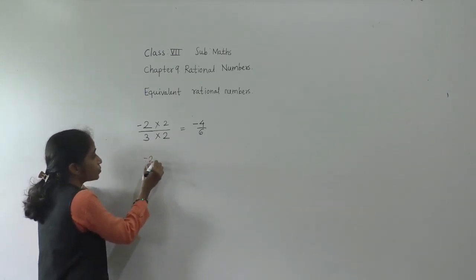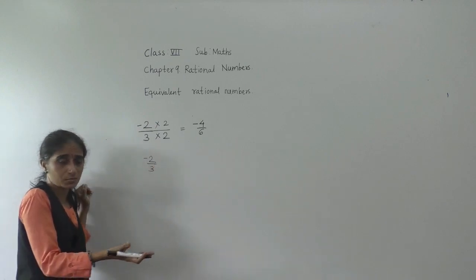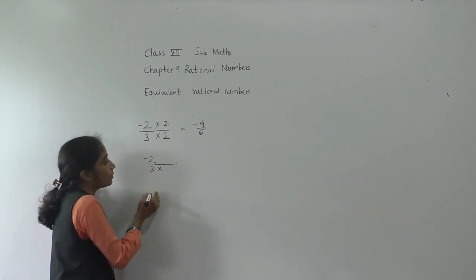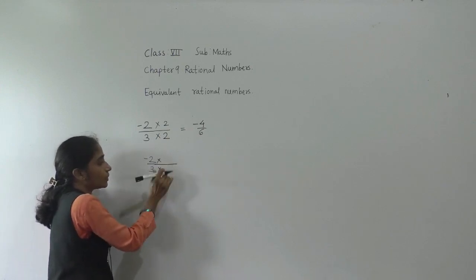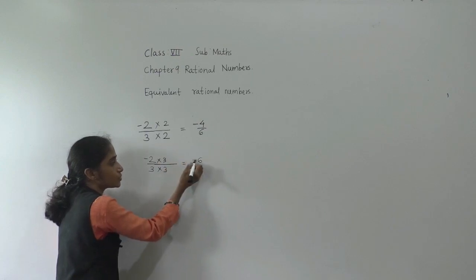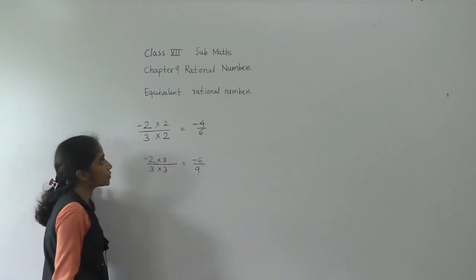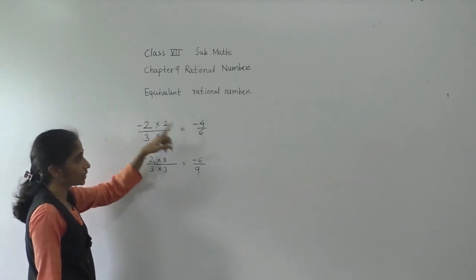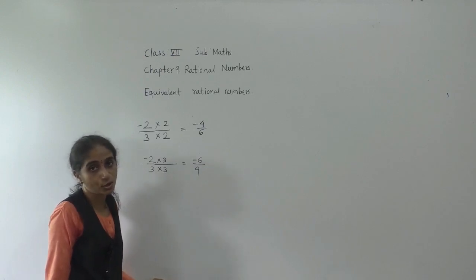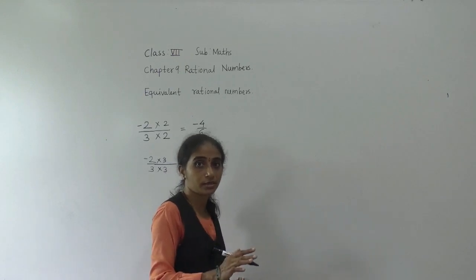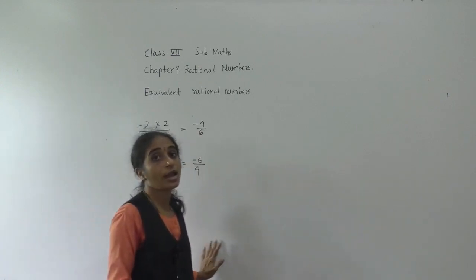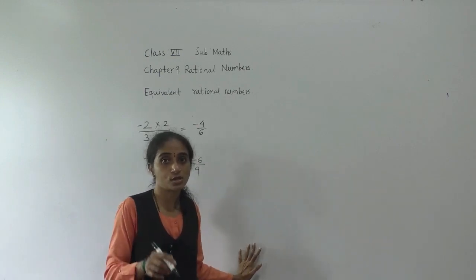We can find more equivalent rational numbers for minus 2 upon 3. We have to multiply numerator and denominator with the same non-zero integer. We already multiplied by 2; now we can multiply by 3 for both numerator and denominator. 3 times 2 is 6 — one number is negative, this is positive, so the answer is negative. 3 times 3 is 9. So we get minus 6 upon 9. The equivalent rational numbers are minus 2 upon 3, minus 4 upon 6, and minus 6 upon 9.